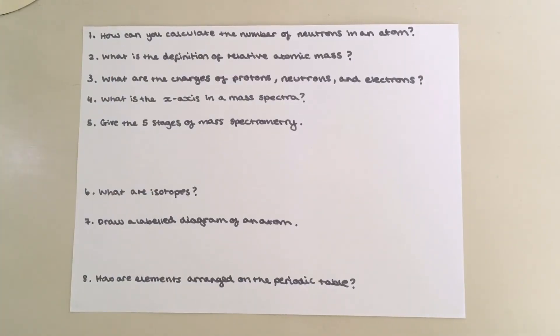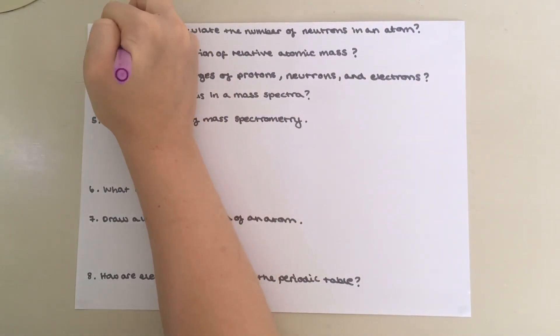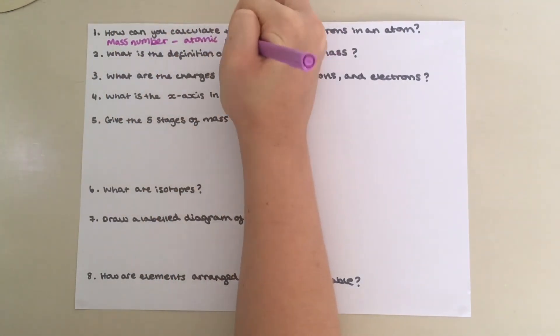So now feel free to pause the video and have a go at these questions. Question 1: How can you calculate the number of neutrons in an atom? So it is mass number minus atomic number.